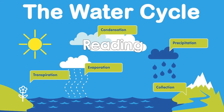Clouds can be a mass of water droplets and or ice particles. When the clouds get heavy enough, the water falls back to the ground in the form of rain, snow, or hail. This is called precipitation.